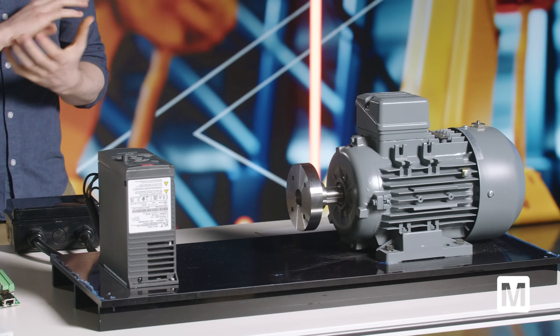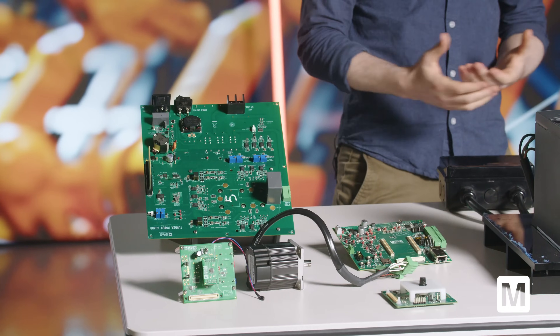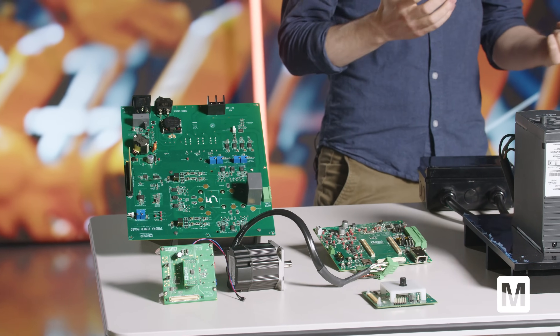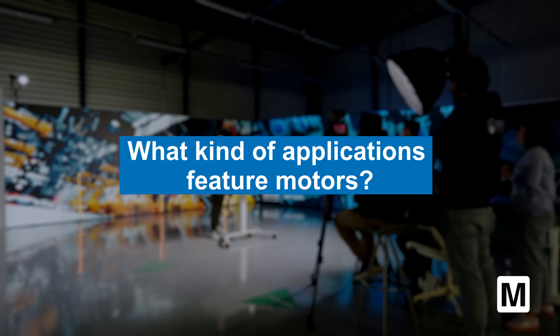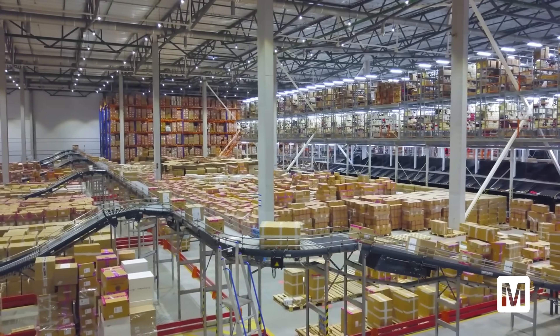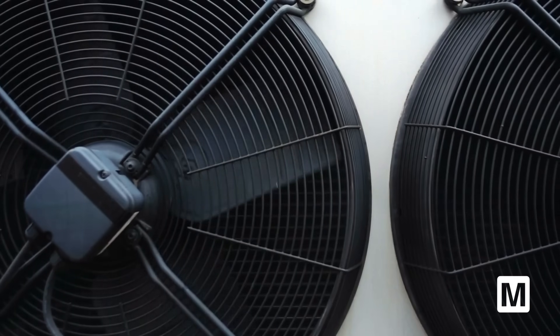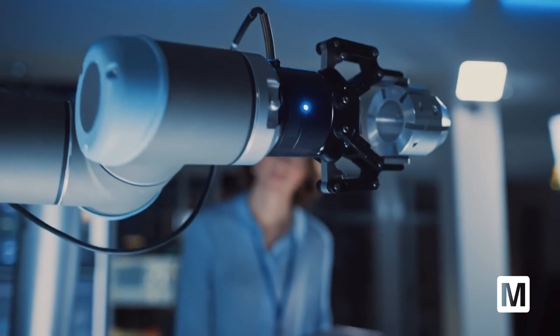Motors come in all shapes and forms. Even within the demo here, I've got a three-phase AC induction motor, which is the most common type used in industry today. But I've also got a smaller BLDC motor, and each of these motors has a different advantage and is used in a different situation. Motors are found in every type of application — in conveyance systems, in compressors used in AC ducts, in robotics — and they're found in just about every stretch of industry.